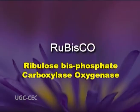Now, I will come back to rubisco to talk about its unique properties. Rubisco is the most abundant protein on earth. However, it is considered to be a very inefficient enzyme, since it exhibits two distinct activities.